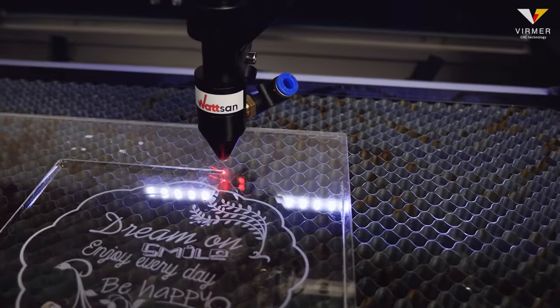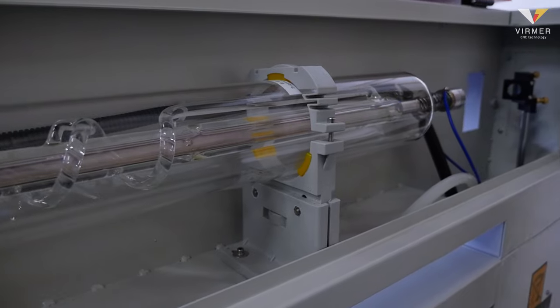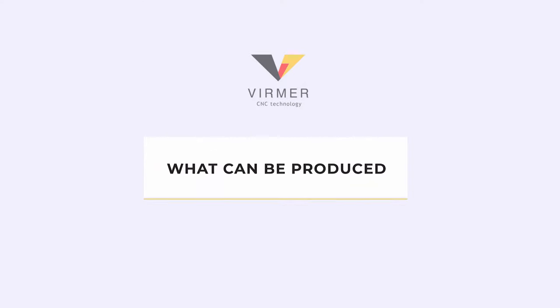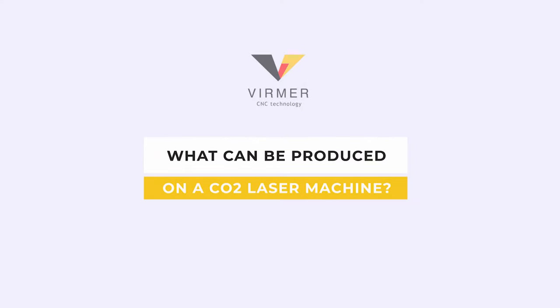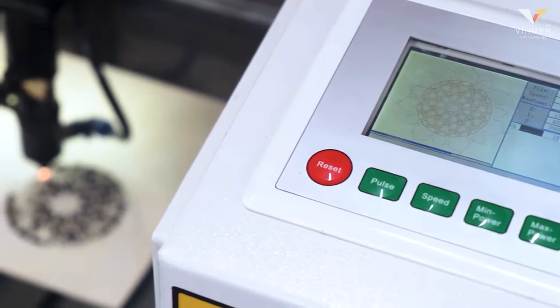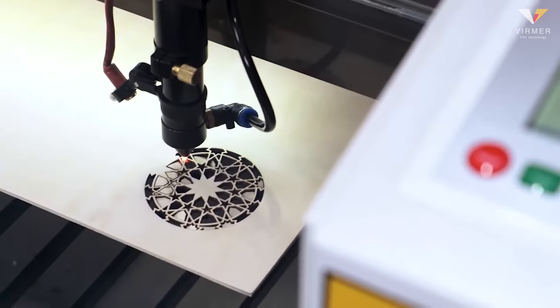Now, when we know how the laser beam is formed, let us move to the other question. What can be produced on a CO2 laser machine? CO2 CNC laser machines can process organic materials.